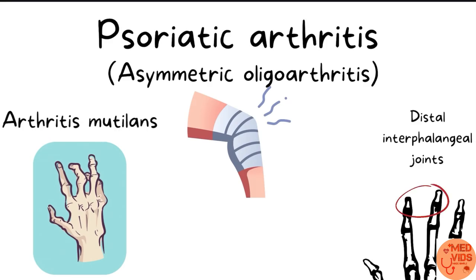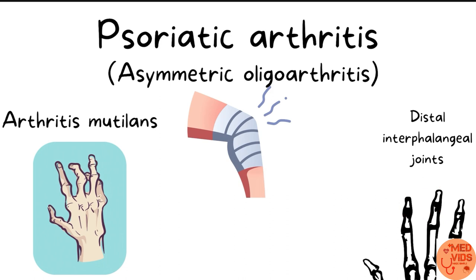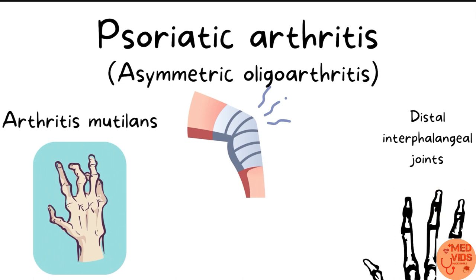Joint involvement in psoriasis is called psoriatic arthritis. It commonly presents as asymmetric oligoarthritis, meaning fewer joints are involved and the same joints are not affected on both sides of the body. It can involve large joints like the knee or small joints in the hands, commonly involving the distal interphalangeal joint. A severe variety called arthritis mutilans is a debilitating form where joints are severely damaged, though this type is not very common.